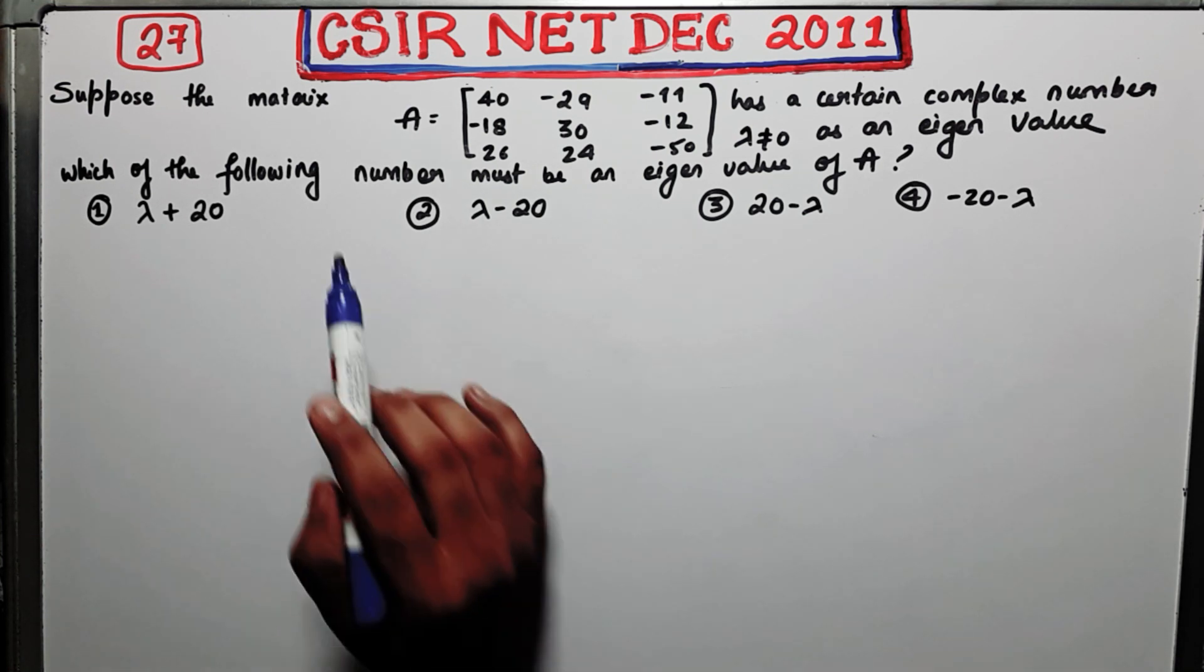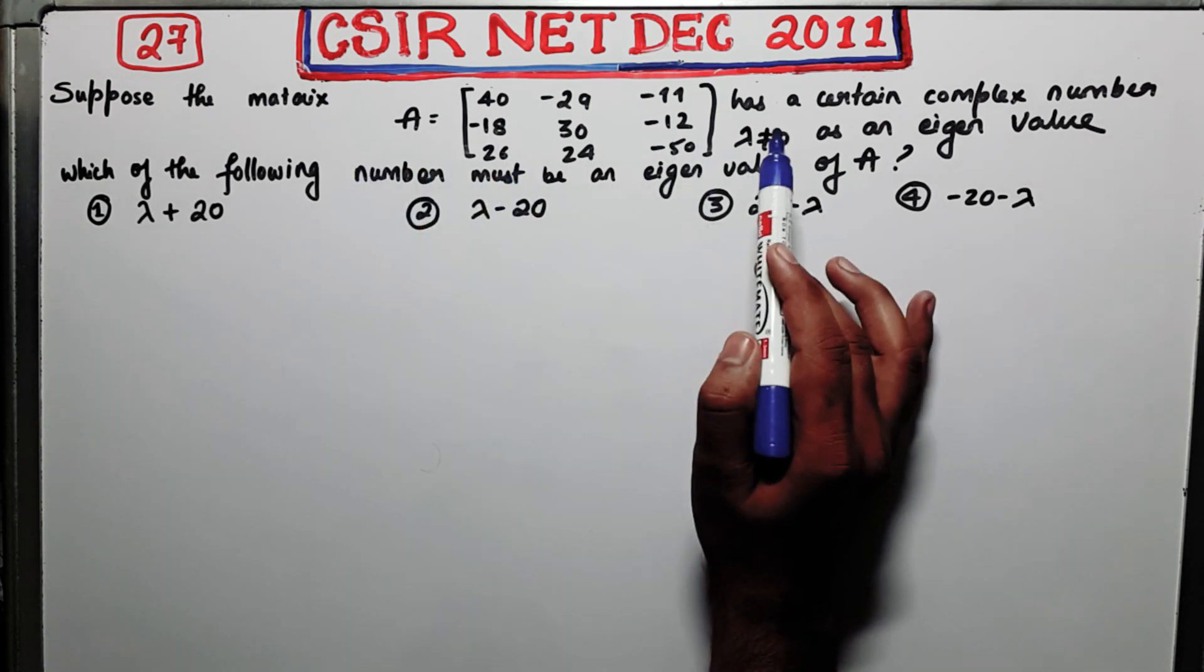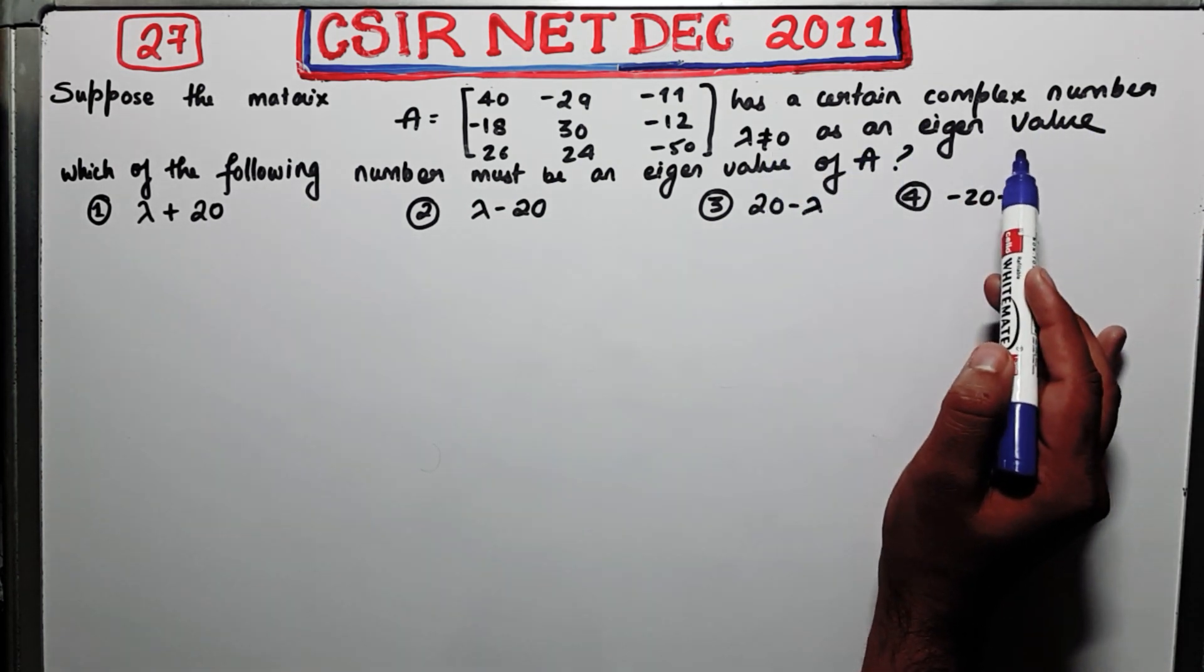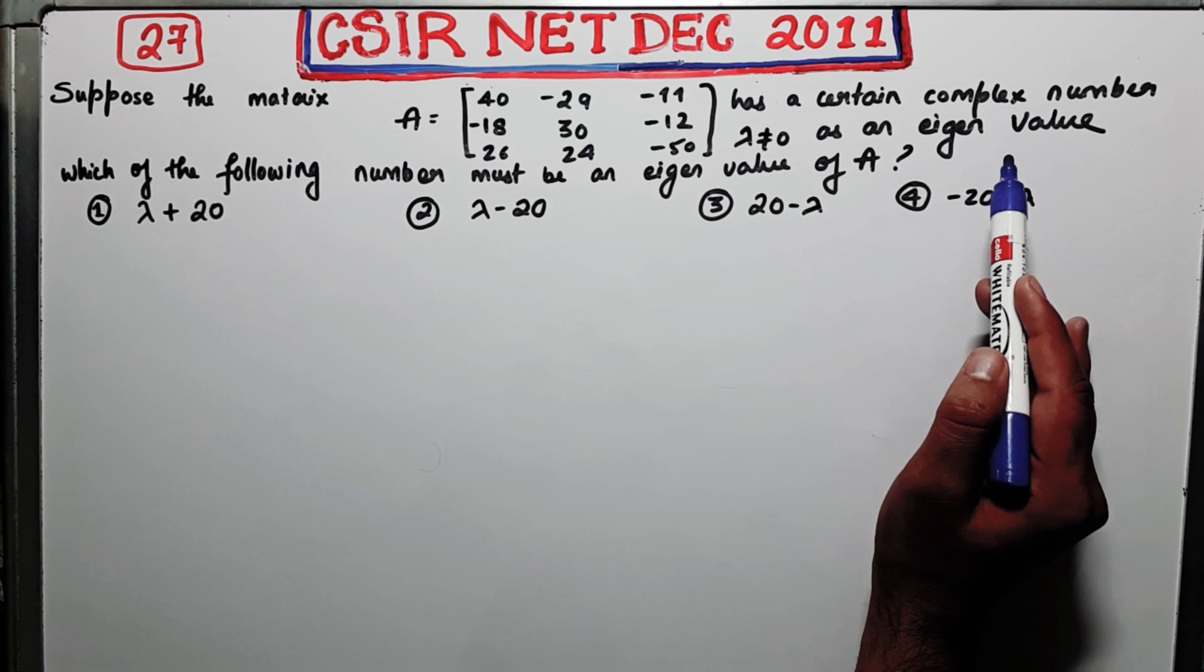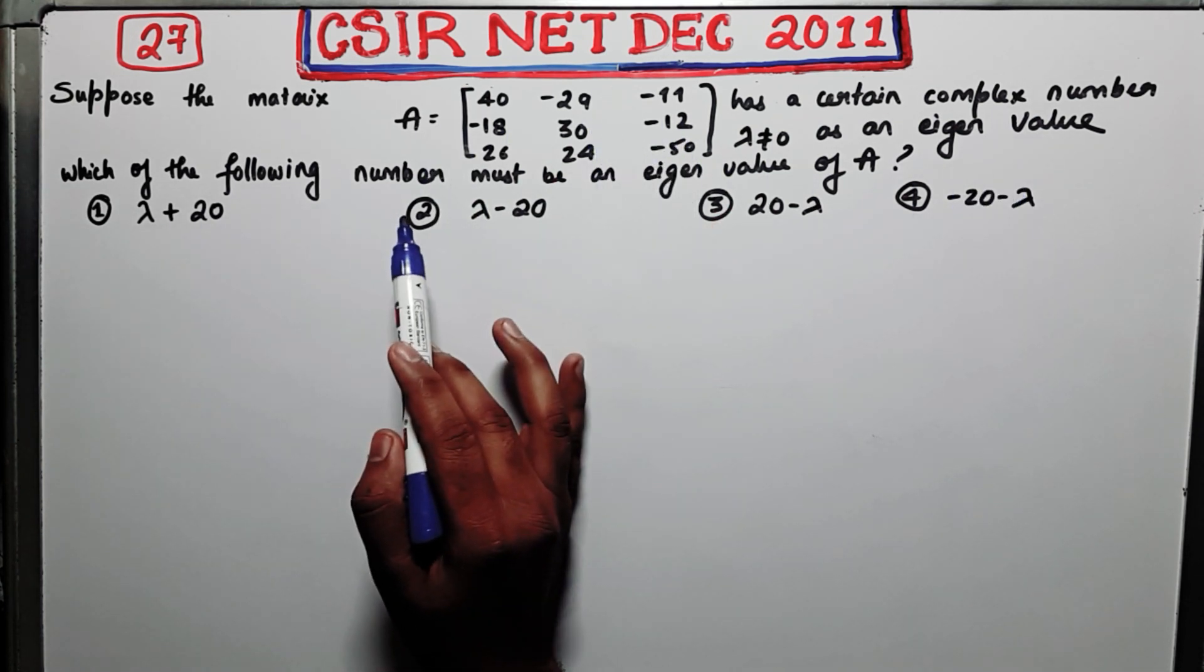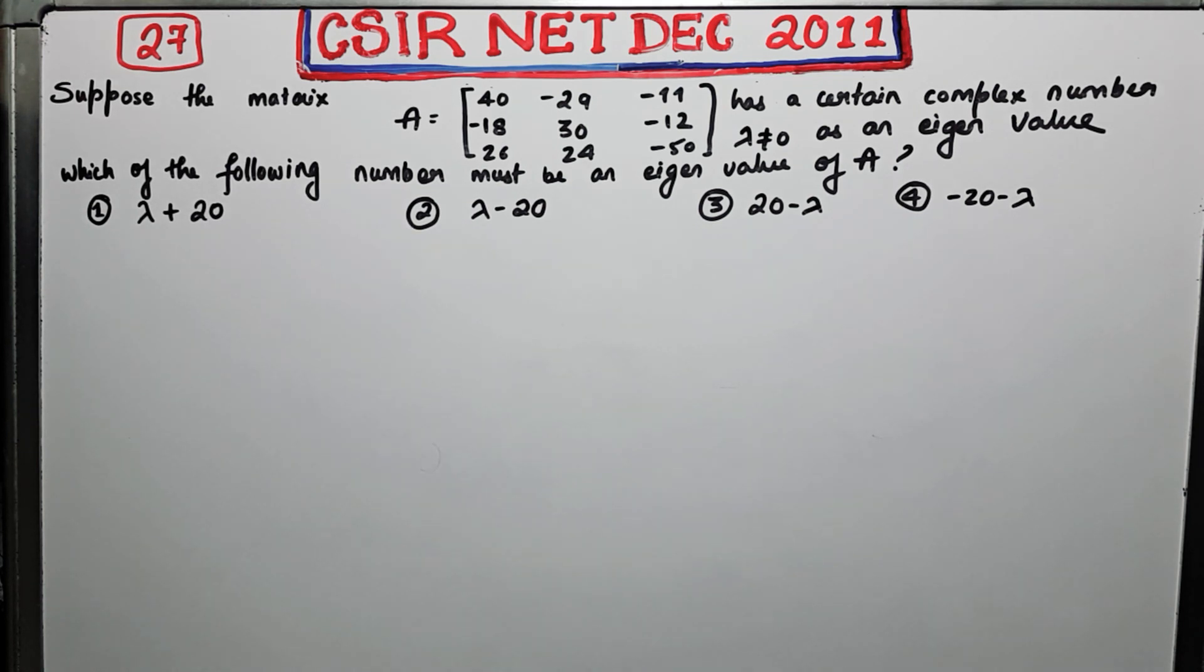Suppose the matrix A has a certain complex number lambda as an eigenvalue. So it is given to you that lambda is an eigenvalue for this matrix. Then it says which of the following number must be an eigenvalue of A. This is what you have to figure out.